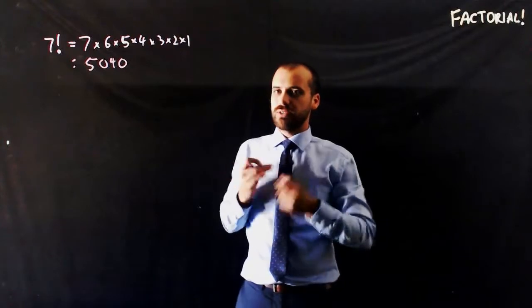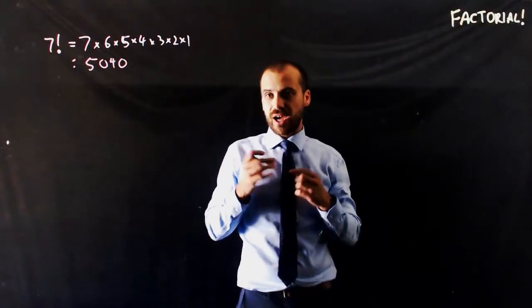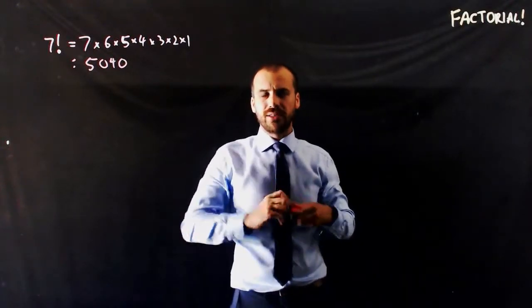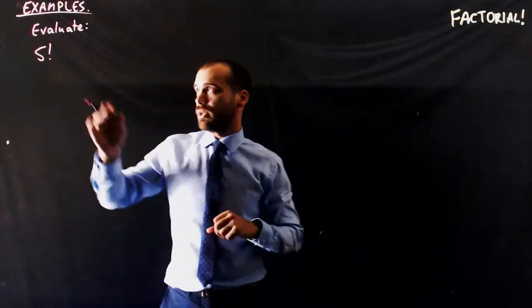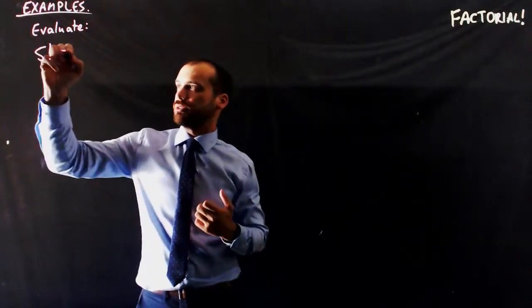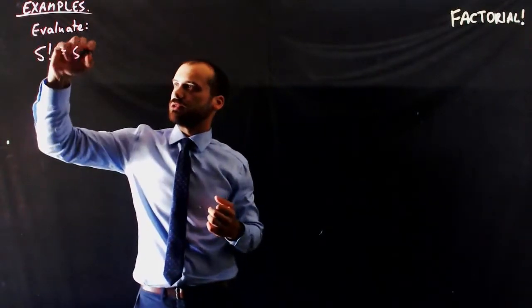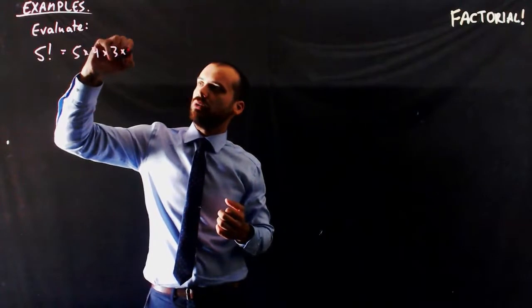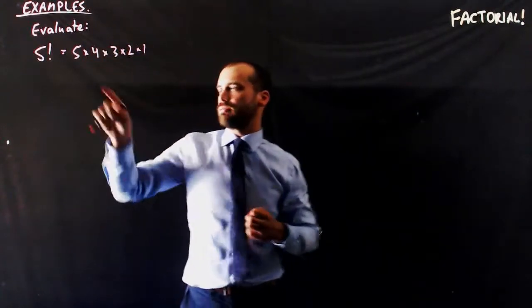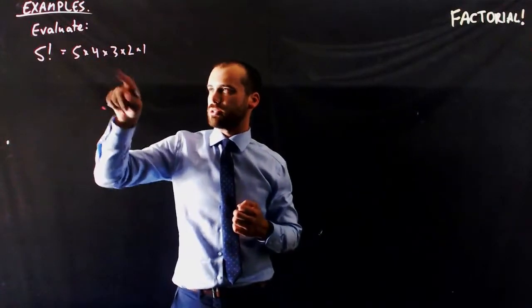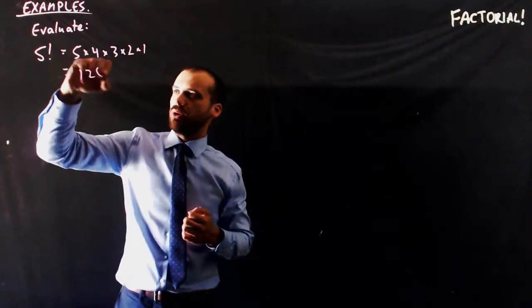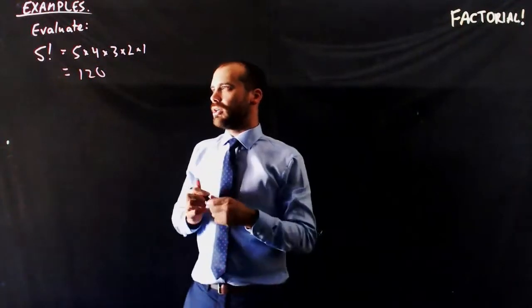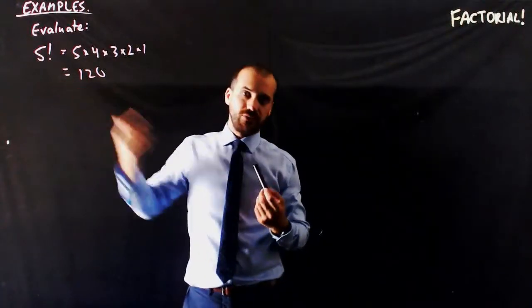We can do a bunch of examples with factorials and some surprising sorts of things happen when you actually start working with it. So a very quick first example, evaluate 5 factorial. Well, 5 factorial is 5 times 4 times 3 times 2 times 1 and that's going to be 5 times 4 which is 20 times 3 which is 60 times 2 which is 120 and obviously that 1 is not going to change much. That's evaluating 5 factorial.